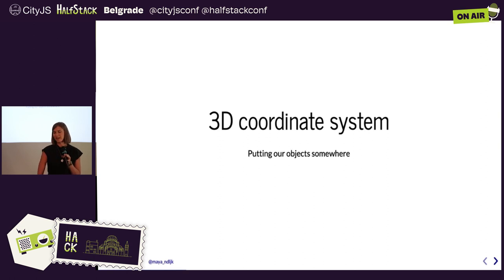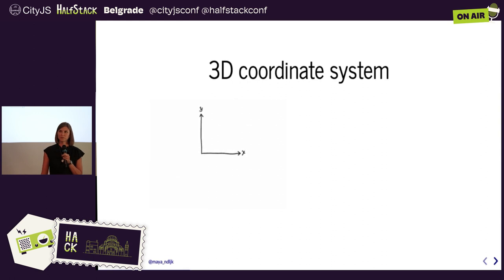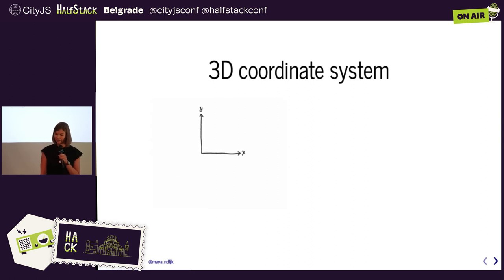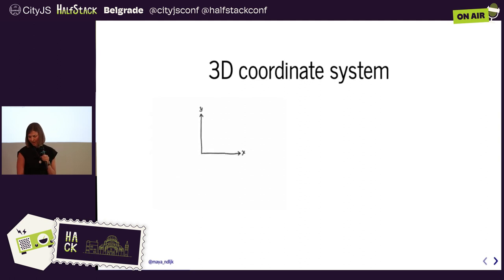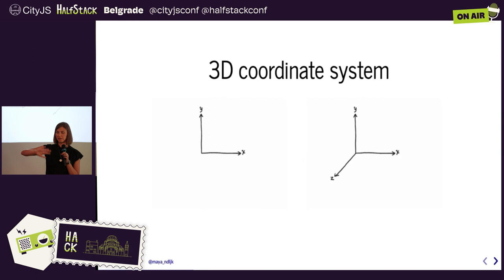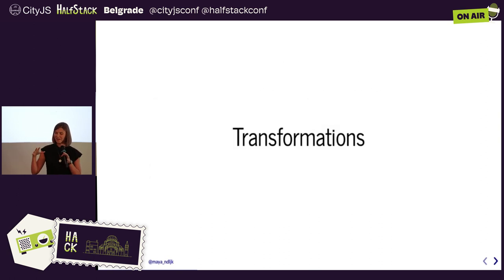We have our object, we know how it's stored, and we need to put it somewhere. We use the 3D coordinate system — similar to the 2D one we learn in school. Positive Y is up, positive X is right. When we add the third dimension there are many ways to orient it — the 'tabs vs spaces' of the 3D world. For Three.js, positive Z comes towards us, negative Z is away from us, and we keep X and Y as you'd see on a screen.